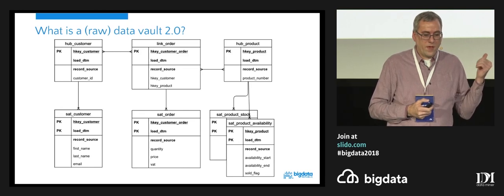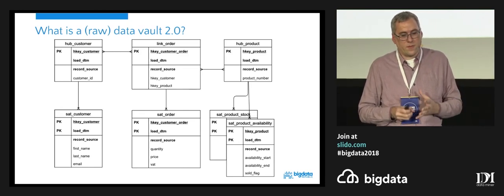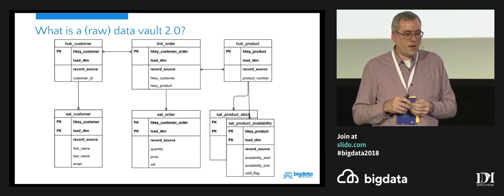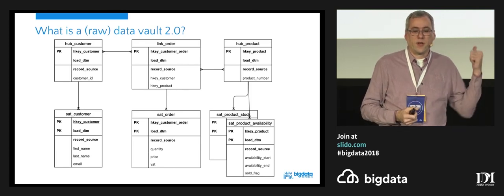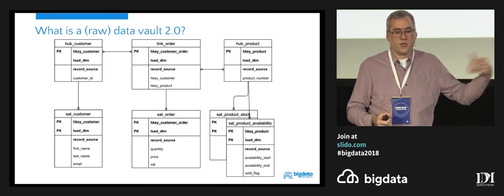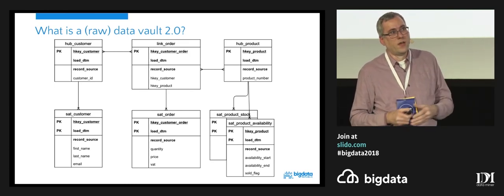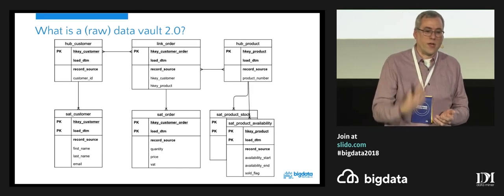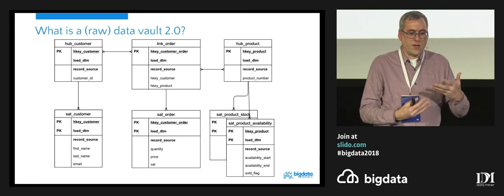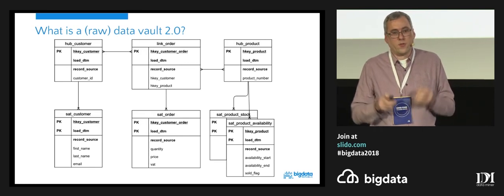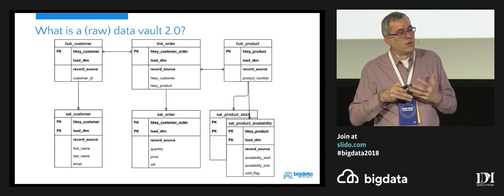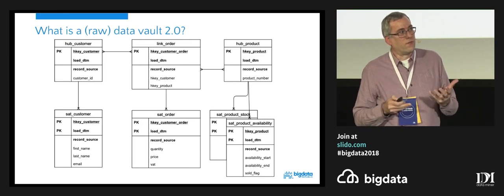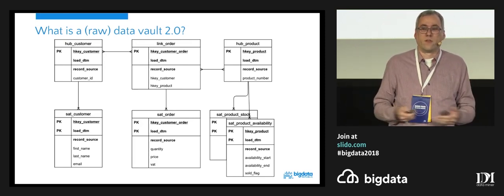Data Vault allows you to consume your transactional data and bring it into a different structure where you follow the methodology, and from there you'll be able to build your end products more easily. For example, with the hub customer, if you have multiple systems that have a customer in them, you basically add more satellites for each subsystem, but you always tie it back to the hub. If at some point you need to bring those customers together, you can run a separate algorithm to understand how those satellites are related to one another — decomposing a problem into a structural schema, the Data Vault, instead of running SQL that is really difficult to follow afterwards.